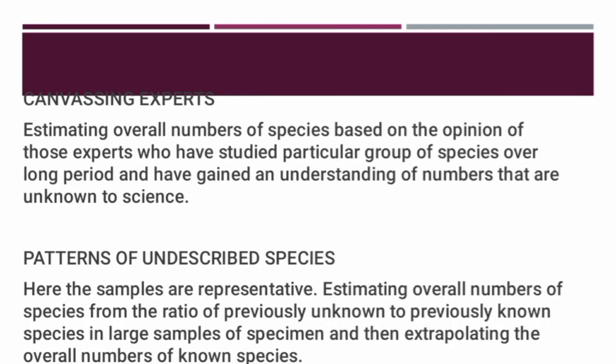The first method is canvassing experts: estimating overall numbers of species based on the opinion of those experts who have studied particular groups of species over a long period and have gained an understanding of numbers that are unknown to science.